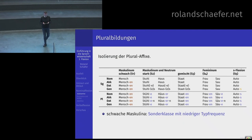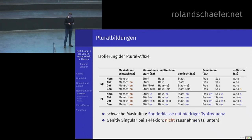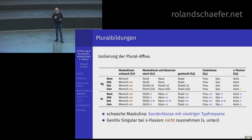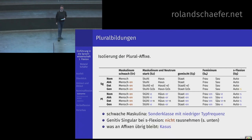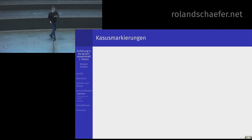Das ist eigentlich nur bei den sogenannten schwachen Maskulinern der Fall – davon gibt es nur etwa 500, deswegen sortieren wir die mal zur Seite. Schwache Maskuliner sind eine Sonderklasse mit sehr niedriger Typenfrequenz, das ist nicht der Kern des Systems. Bei Autos ist im Plural immer ein S, aber auch im Genitiv Singular des Autos. Jetzt haben wir die Plural-Kennzeichen isoliert – und alles, was dann noch übrig bleibt außer dem Stamm, muss ein Kasus-Kennzeichen sein.